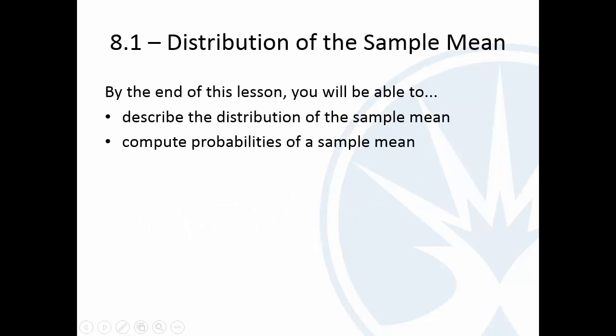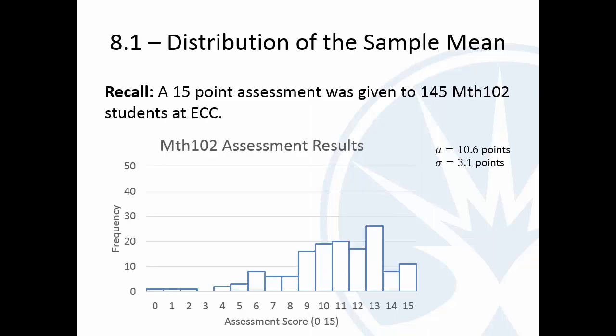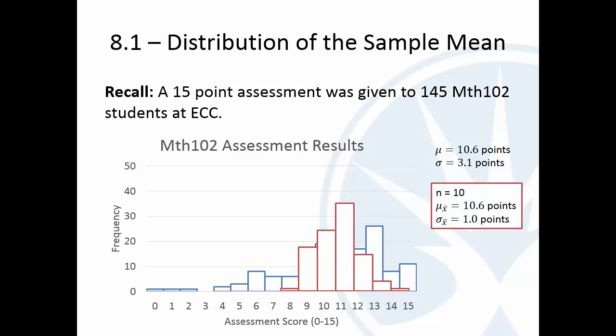That's the type of thing we're going to look at. We're going to start with the distribution of the sample mean, and so we're going to talk about how to describe what is the distribution of the sample mean, and then to compute some probabilities. To look at the distribution of the sample mean, I'm going to refer back to an example we did before, where I talked about an assessment worth 15 points given to 145 general ed stats students. Here are the results. This is a histogram, just a single-valued histogram, and you can see kind of a left-skewed distribution.